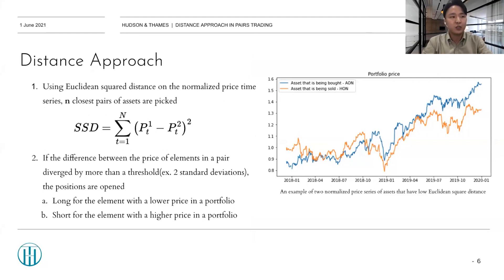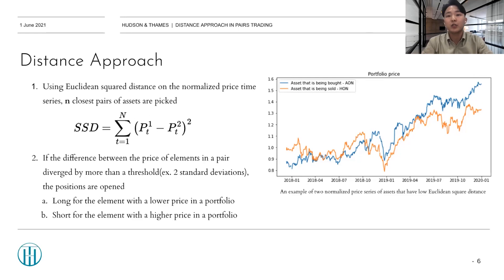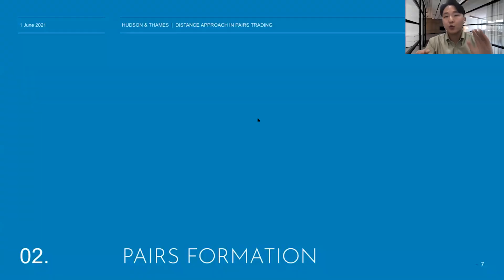If the difference between the price of elements in a pair diverges by more than a threshold — let's say two standard deviations — then the positions are opened. The plot on the right side of the screen shows the two stocks' price series which are normalized. This was just a quick overview of the basic concepts of the distance approach.